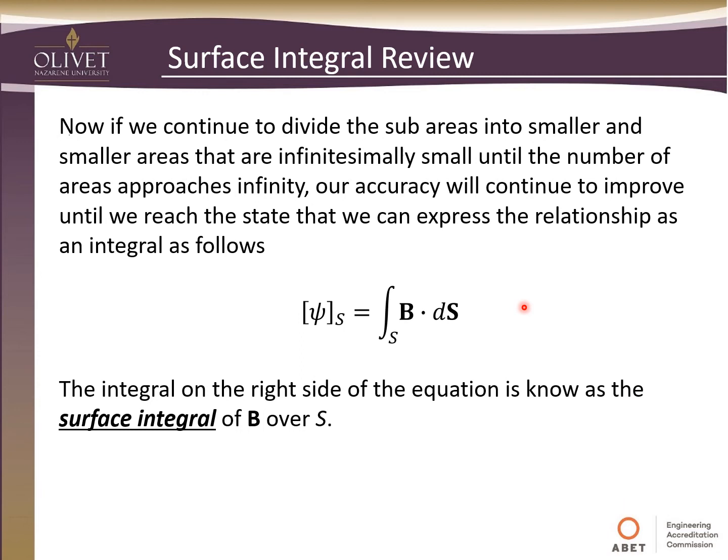So the integral on the right side of this equation is known as the surface integral of b over s, or we should say the magnetic flux density over the area. Again, we need to take in mind that since this is integrating over a surface, it should be a double integral.